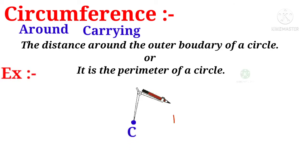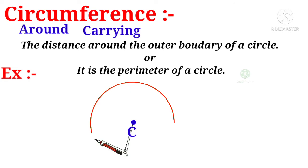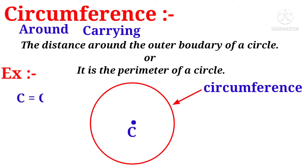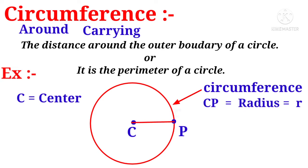Let us take an example. Take a point C as the center and draw a circle with some radius. The curved path of the red line is called the circumference, and C is called the center. Take any point P on the circumference and join C with P — then CP is called the radius, generally denoted by r.